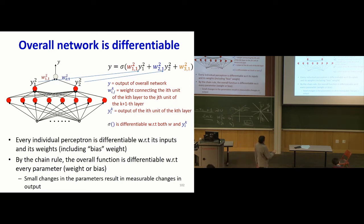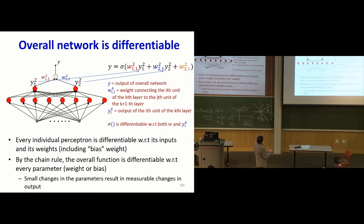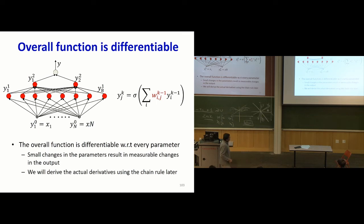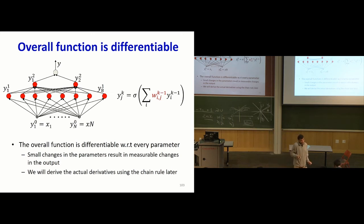A note on notation: W_{ijk} is the weight connecting the i-th unit of the k-th layer to the j-th unit of the (k+1)-th layer; Y_{ik} is the output of the i-th unit of the k-th layer; sigma is a differentiable activation function. The overall network takes an input, computes an output, and this entire function is differentiable with respect to every single parameter. This means I can tell you how changing every single parameter changes the output — and now I can do something about fixing the network to minimize error on training data.